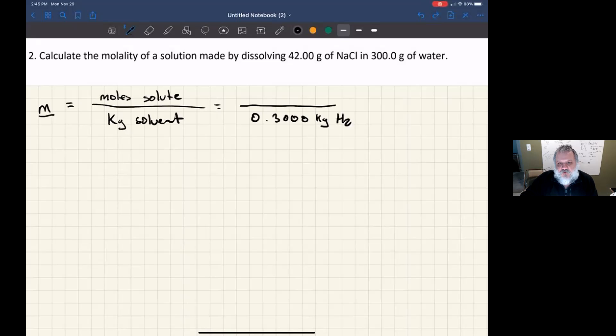I need to figure out the number of moles of the solute, sodium chloride. In order to do that, I would use its molar mass because I'm giving the amount in grams. So the molar mass is 58.44 grams of sodium chloride for one mole of sodium chloride.